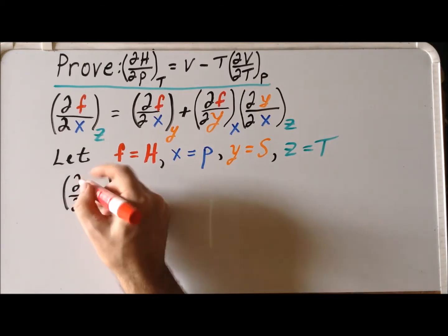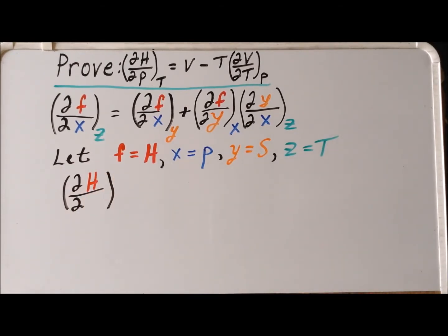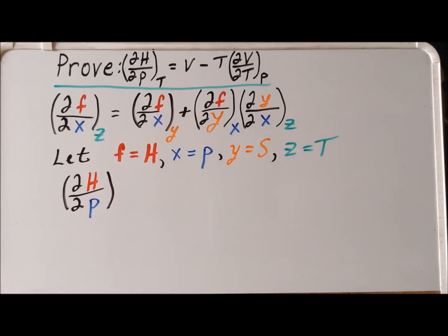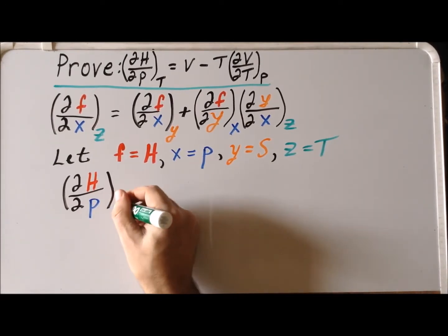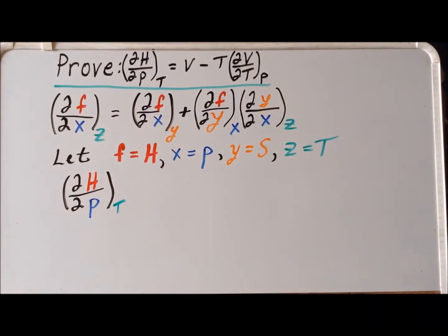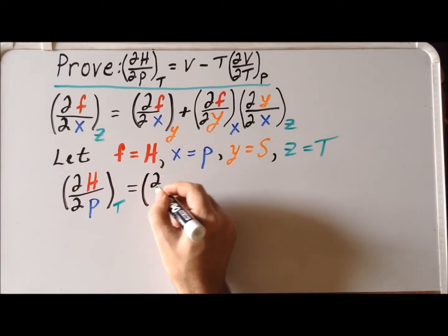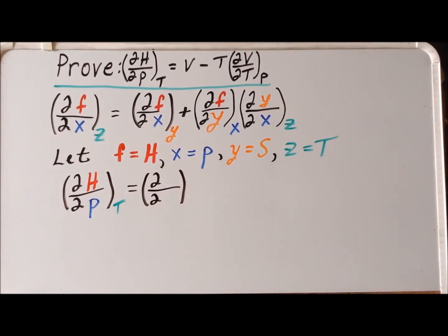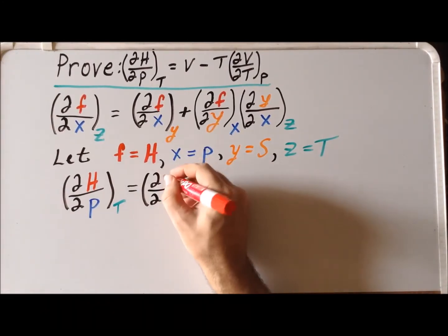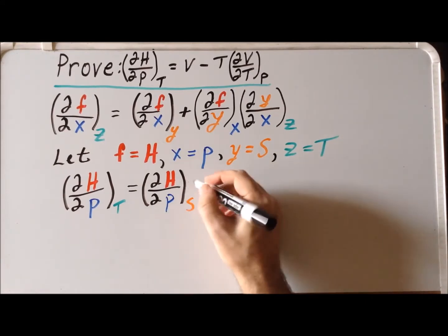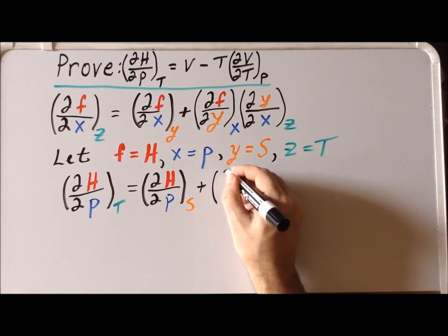So the first term becomes the change in the enthalpy as a function of the pressure at constant temperature, which is exactly what we wanted to prove. So far it looks as if our variable assignments will be helpful. And then we have the change in the enthalpy as a function of the pressure at constant entropy. And then we have our product of partial derivatives.